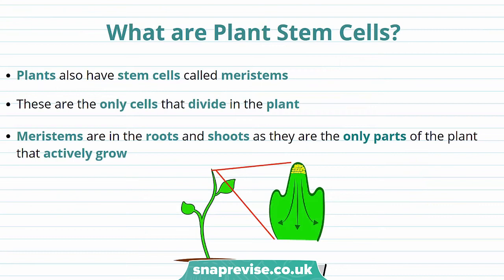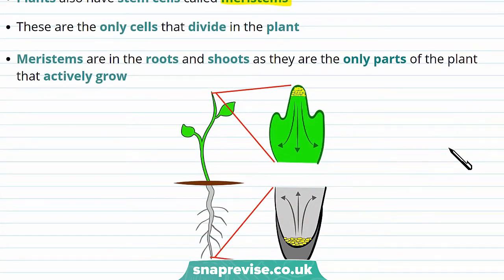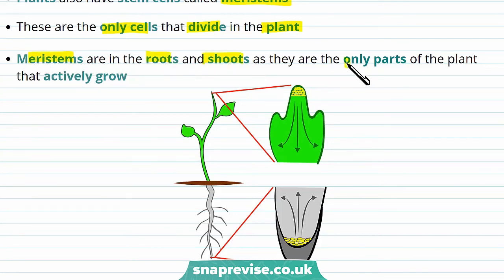We've talked a lot about stem cells found in animals, but plants also have stem cells, and these stem cells are called meristems. Meristems are important because they're the only cells that can divide in the plant, and that means that plants can continuously grow throughout their lives. The meristems are in the roots and the shoots, because they're the only parts of the plants that actively grow.